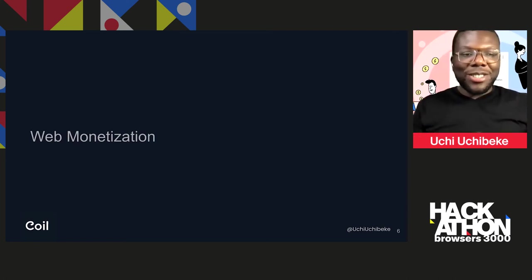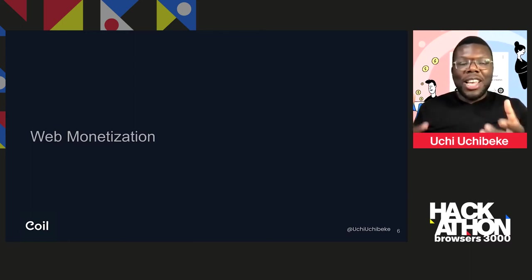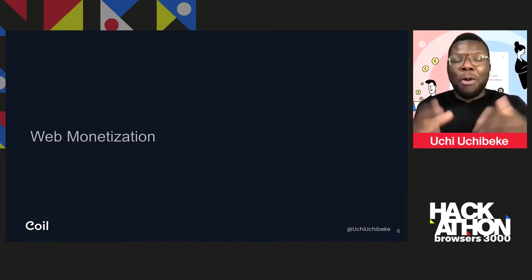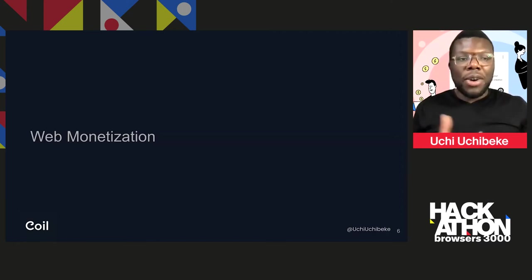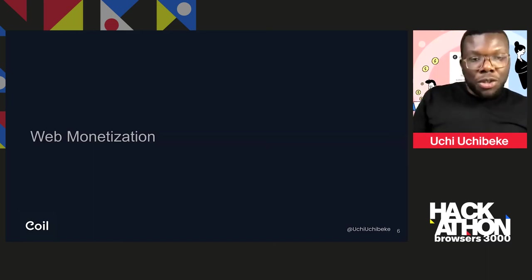Yuri already talked about this and showed how it works on the Puma browser, which is super cool. With web monetization and the COIL extension, you can also enable real-time payments from your browser to web monetized websites on any browser as long as you have the COIL extension. The goal is that web monetization should be native across all browsers, so regardless of what device you're on, you can enjoy content without seeing ads and support the content creators providing value to you.